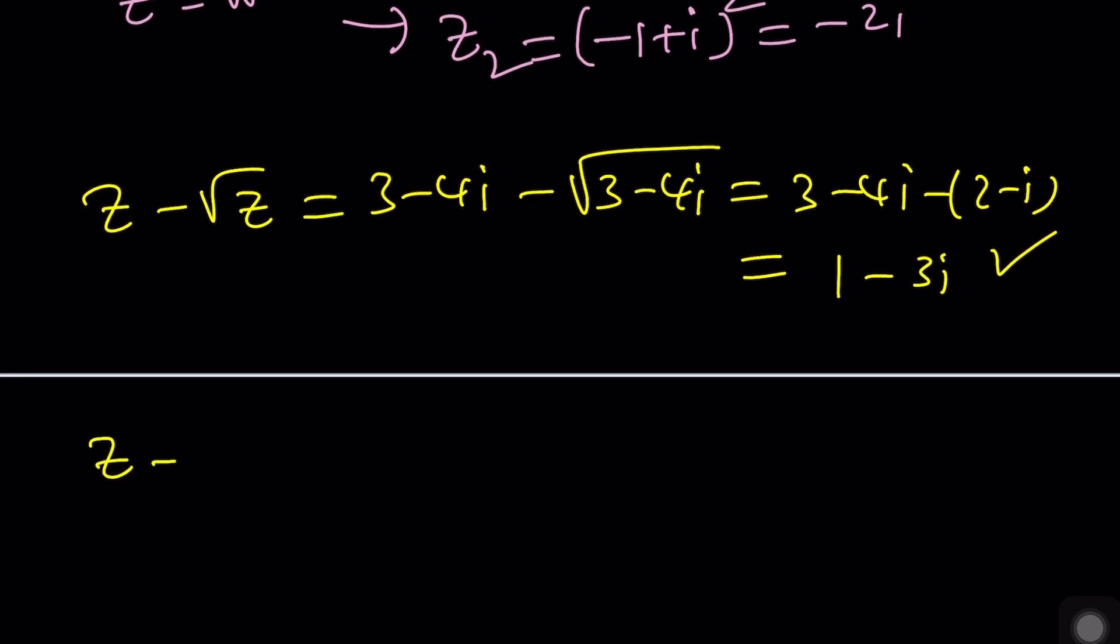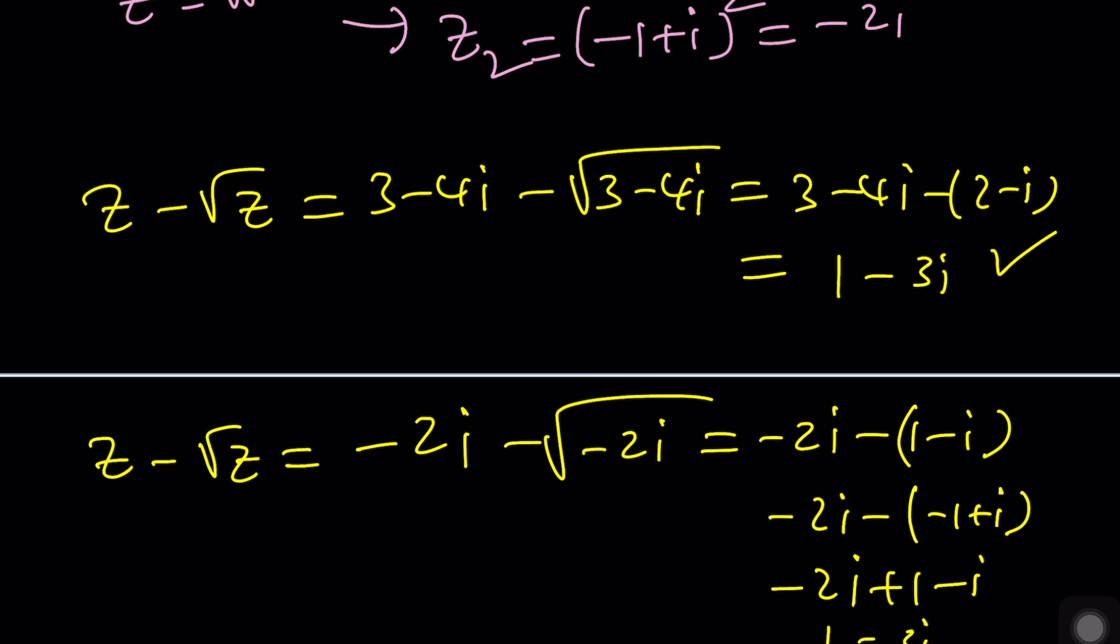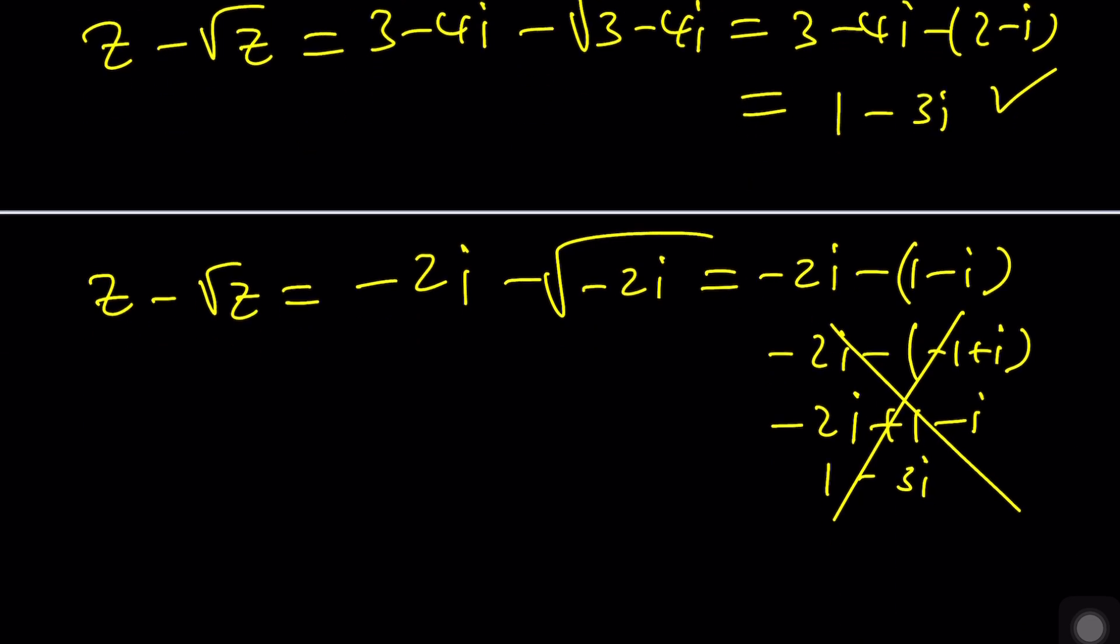What about the second one? Z is negative two i and the square root of z is what? One minus i. Why did I switch from negative one plus i to one minus i? This would give you negative two i plus one minus i and that would be one minus three i. So that seems to satisfy the equation but here's the problem. When I say the square root it needs to be a certain number. You can't have two answers for the square root. That's why we have the concept of principal square root of a complex number. When a complex number has two square roots when it's non-zero we want the square root with a positive or non-negative real part.